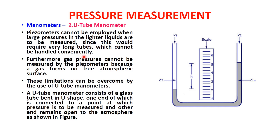Piezometers cannot be used where large pressures in lighter liquids are to be measured, since this would require very long tubes that cannot be handled conveniently. Furthermore, gas pressures cannot be measured by piezometers because a gas forms no free atmospheric surface. These limitations are overcome by using U-tube manometers.